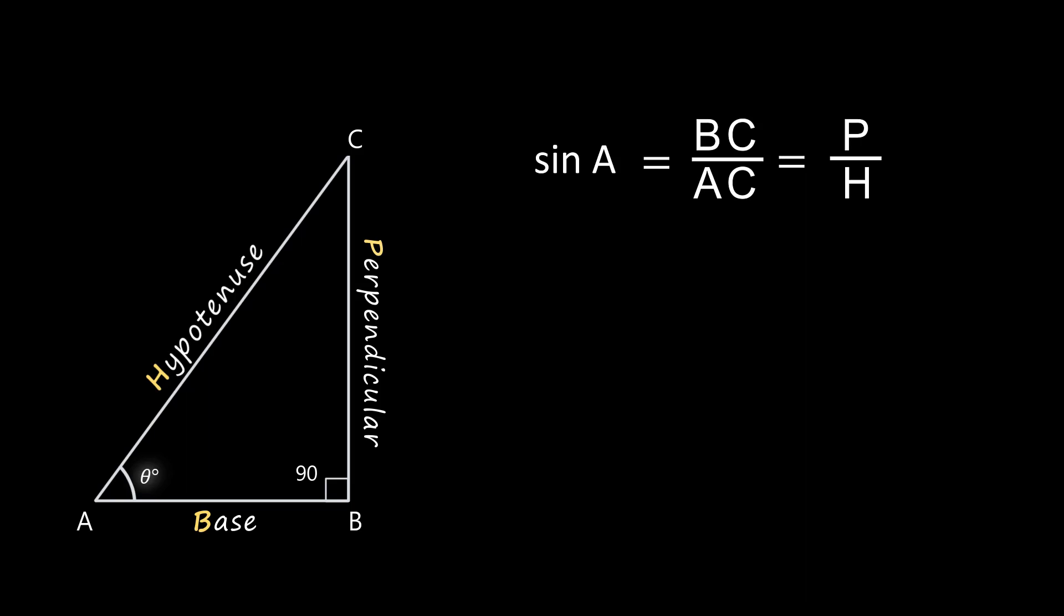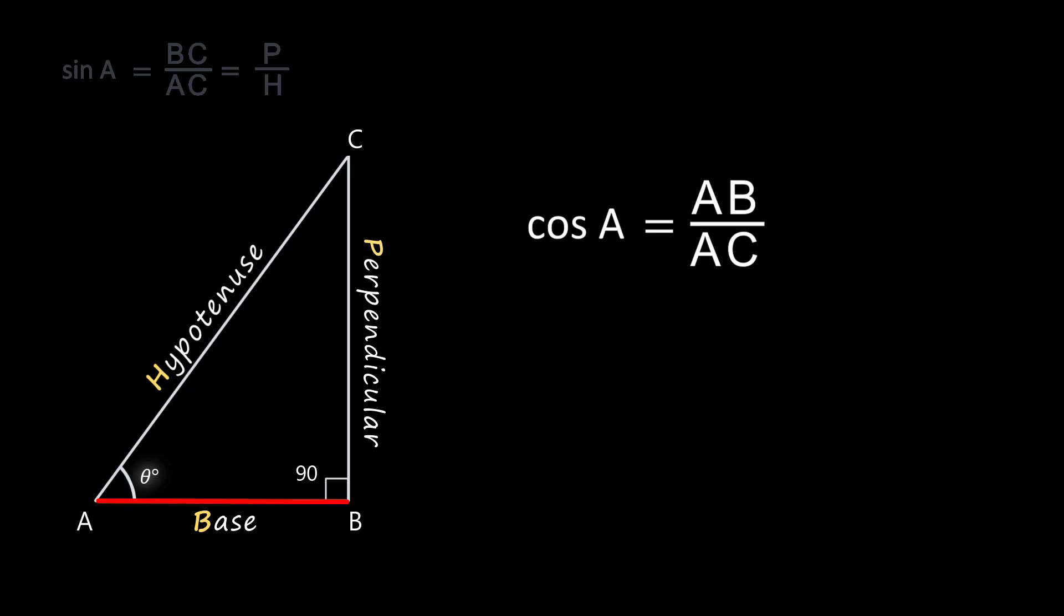Now cos A is defined as the ratio between the base and the hypotenuse. Base is equal to AB and hypotenuse is AC that is equal to B by H. And tan A is the ratio between the perpendicular and the base that is BC by AB or P by B. We can also say that tan A is equal to sin A by cos A.